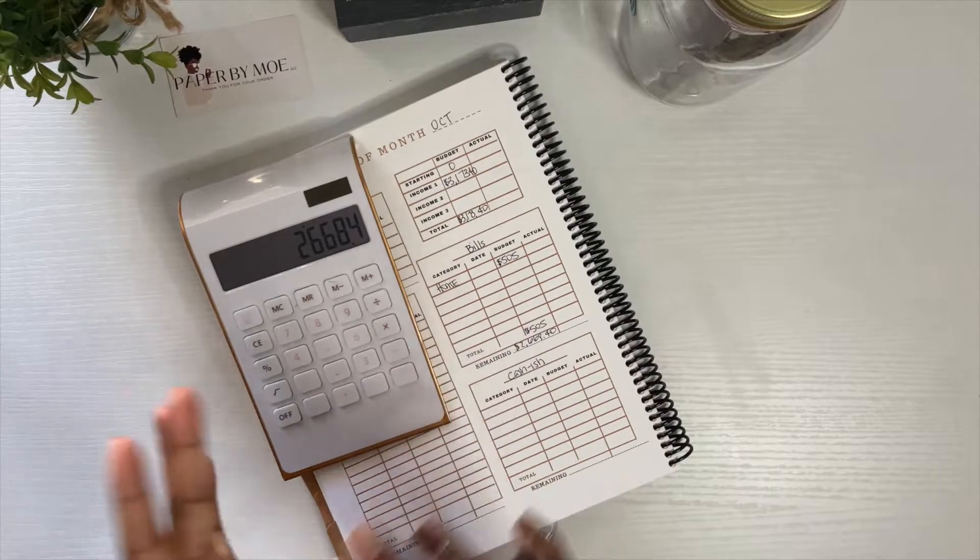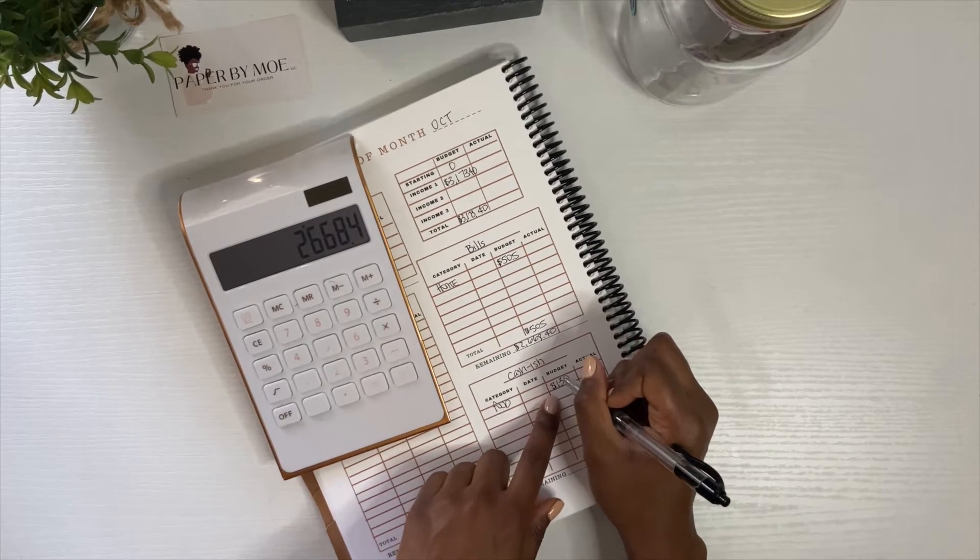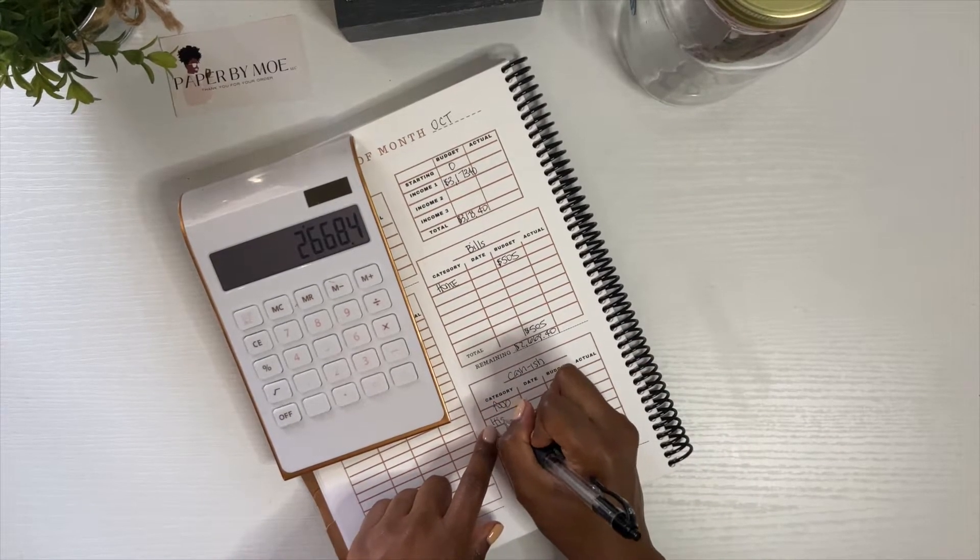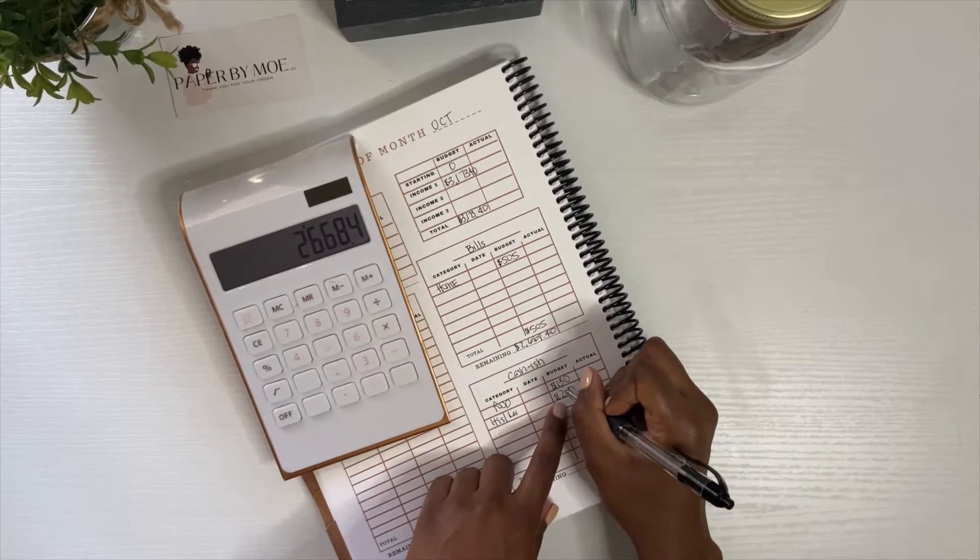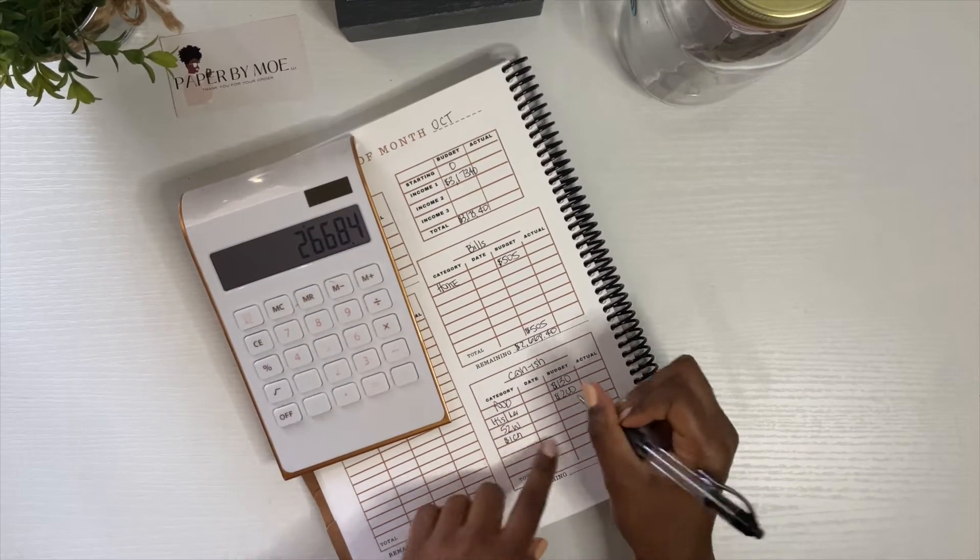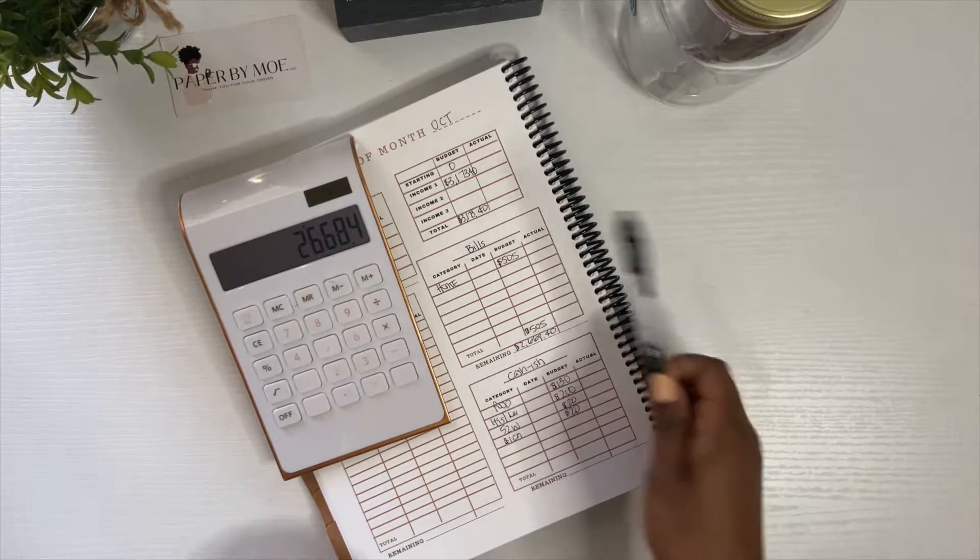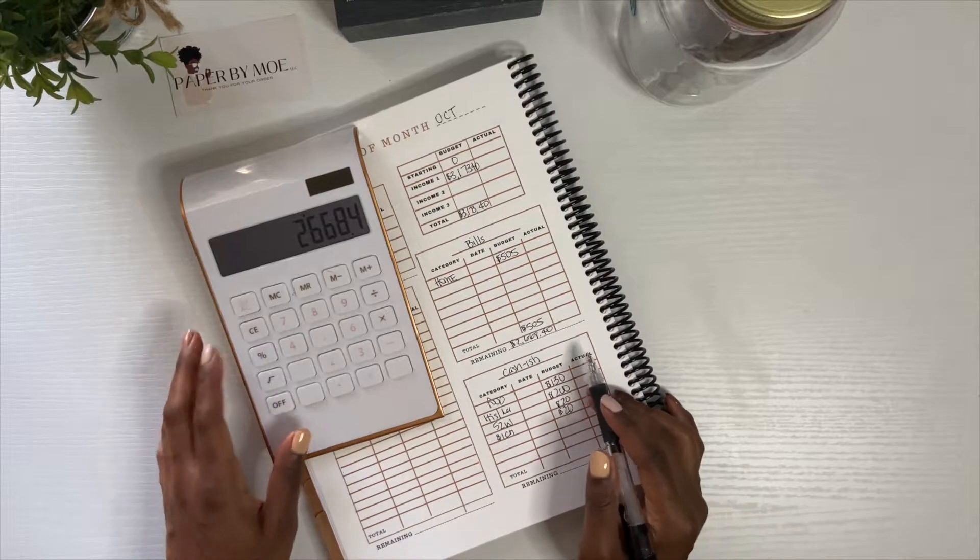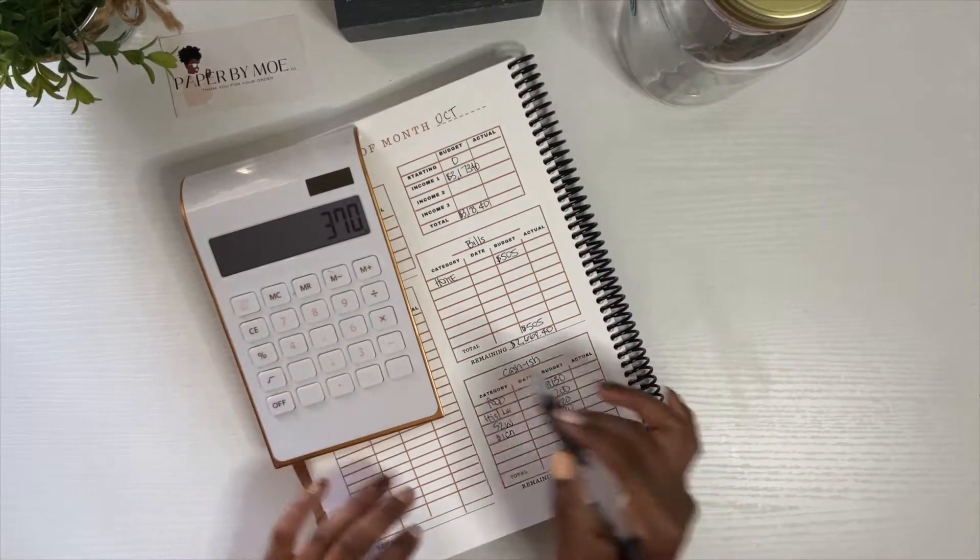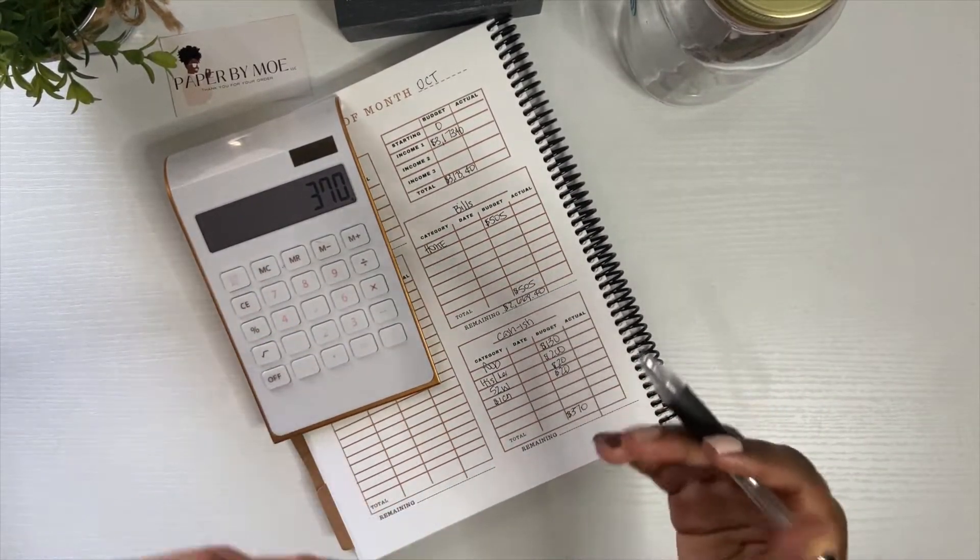The next thing I do is my cash-ish, pretty straightforward, kind of cash, kind of ish. For food I'm just gonna do $130, then I'm gonna have my his and hers, that's gonna be $200. Then we're doing 52 weeks in my $1 savings challenge and I'm just gonna do $20 per paycheck. I'm gonna say $130 plus $200 plus $40, that's gonna be $370.